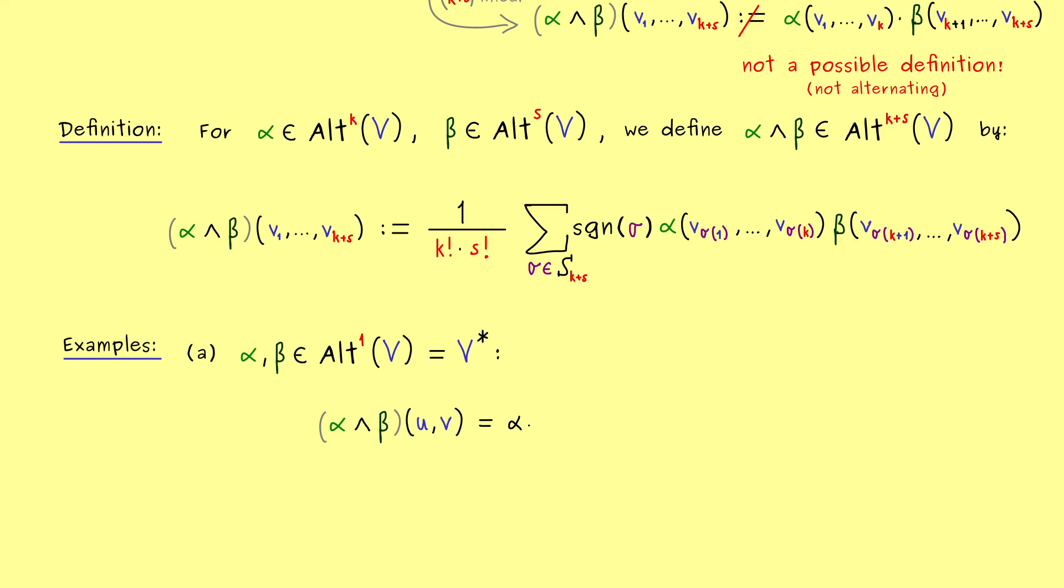And let's start with the trivial one, the identity that does not change anything at all. Hence, in this case, we have alpha(u) times beta(v). And now you already know, the second one just changes u and v here, but it's an odd permutation, so we have a minus sign.